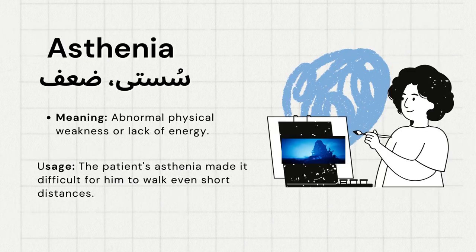Asthenia. Meaning: abnormal physical weakness or lack of energy. Usage: The patient's asthenia made it difficult for him to walk even short distances.